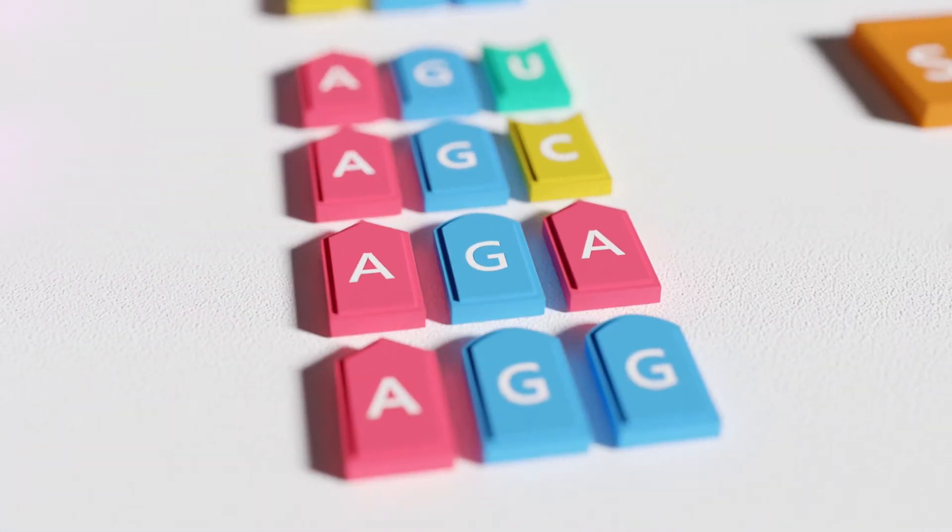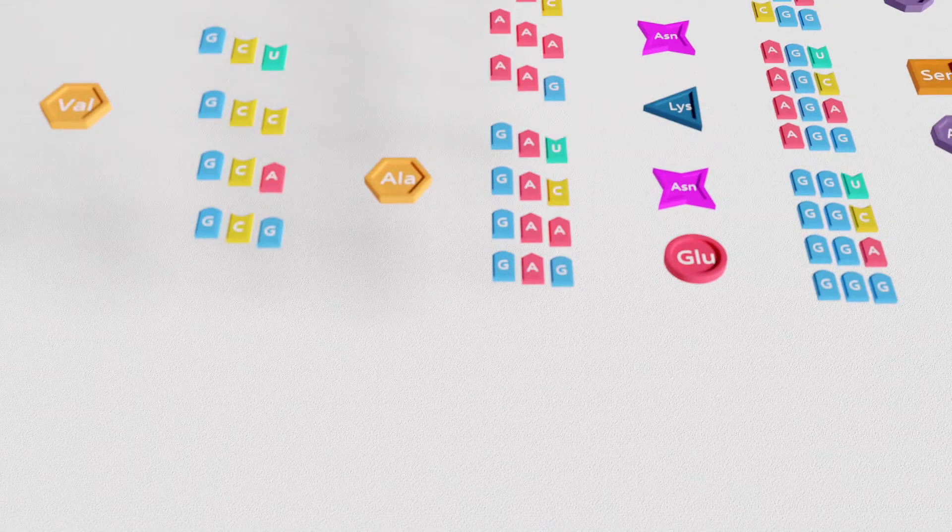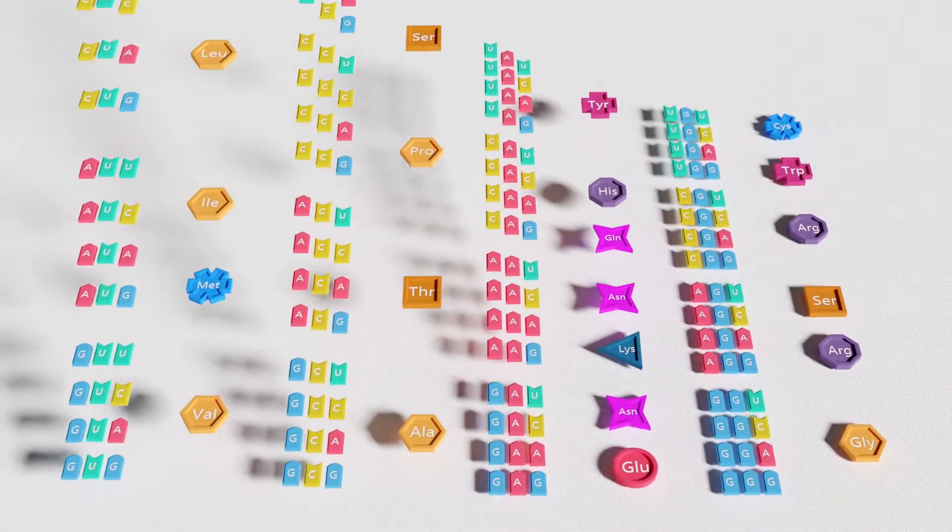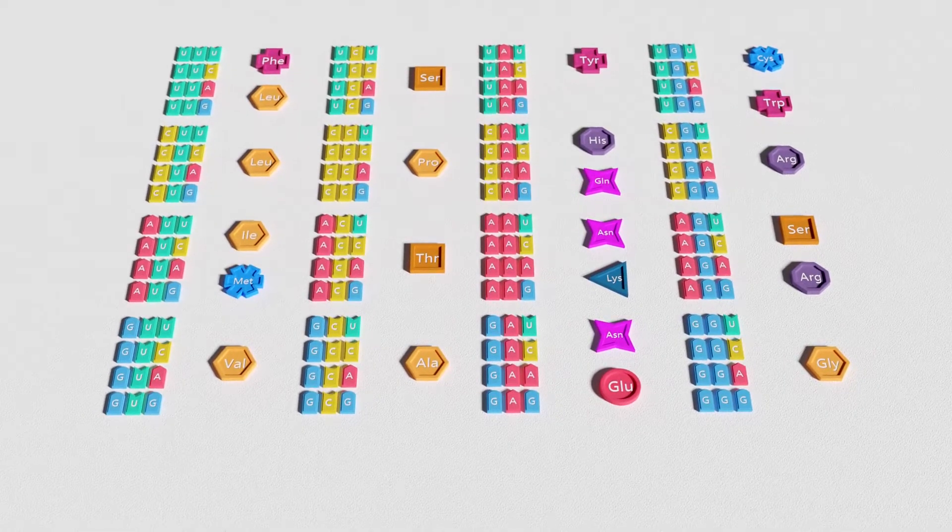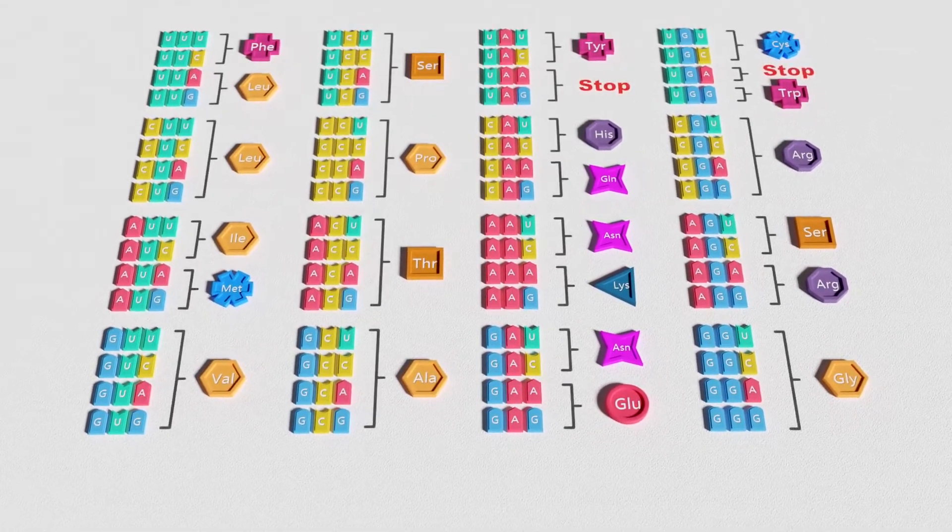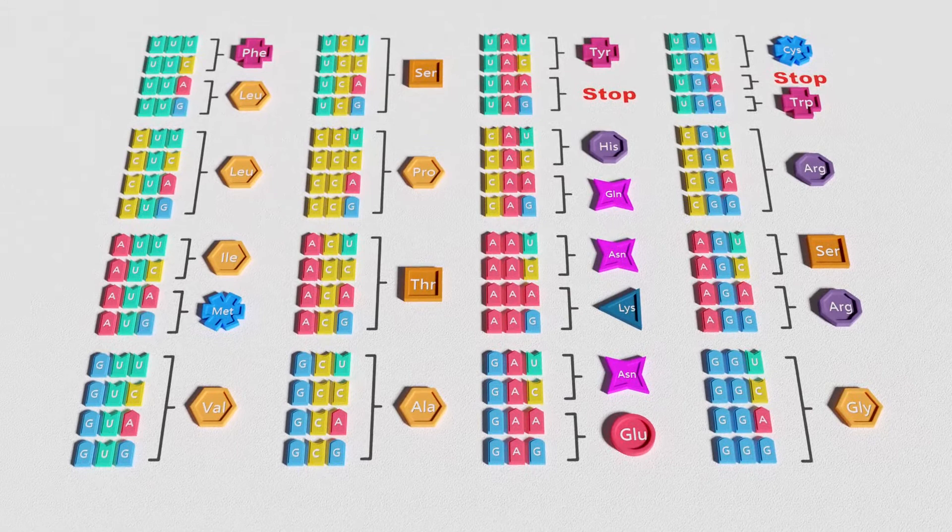Following this, the nature of the genetic code itself began to raise further questions. Out of the 64 possible codons, only 61 encoded 1 of 20 amino acids. Nuremberg also observed that groups of 2, 3, or 4 codons often encoded the same amino acid.